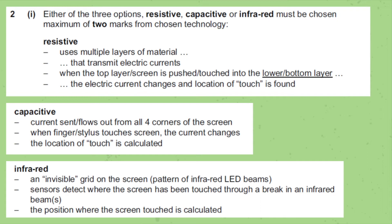Now let's move on to Infrared. IR is a radiation. This technology uses an invisible grid on the screen, and the sensor detects where the screen is touched when IR beams break. The position of the screen touch is then calculated — note that writing 'position of touch calculated' earns you one mark. Next, Resistive touch screen technology uses multiple layers of materials and also relies upon electric current. When the current changes, the touch location is determined — this happens when the top layer is pushed into the bottom layer.